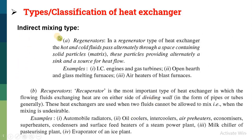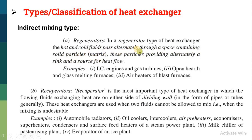Another type is known as indirect mixing. Unlike the direct type where hot and cold fluids mix directly, in indirect mixing the hot and cold fluids do not mix with each other. Number one is known as a regenerator. In a regenerator type of heat exchanger, hot and cold fluid pass alternatively through a space containing solid particles or a matrix. This means hot and cold fluid pass through the same passage but alternately, so they do not mix with each other.